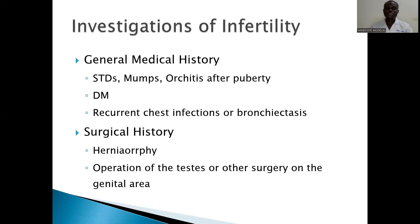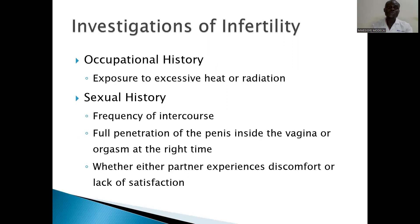Next, we shall also look at the surgical history — for example, herniorraphy. During this procedure, sometimes the vas deferens can be cut or sutured so that it is blocked, and there is no pathway for the sperm. We also consider operations done in the area of the testes, as an operation there can eventually cause a problem. That is why we are concerned with surgical history.